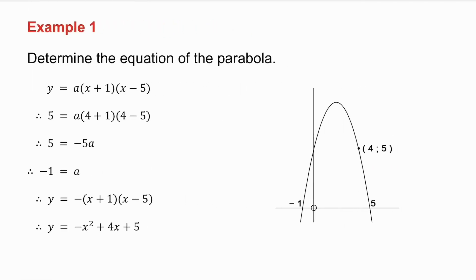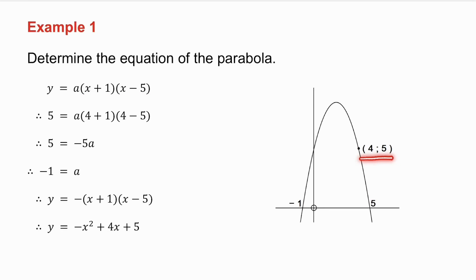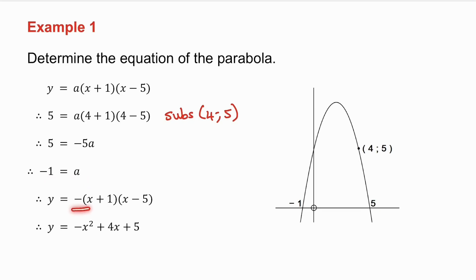In this example, the parabola has x-intercepts of minus 1 and 5, so they come from the brackets (x plus 1)(x minus 5), with an a in front. A point that lies on the parabola is (4, 5), so we substitute x equals 4 and y equals 5, solve for a and get a equals minus 1. That gives the equation of the parabola.